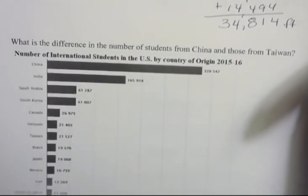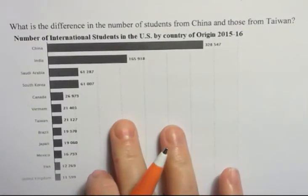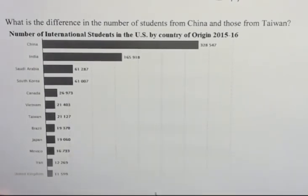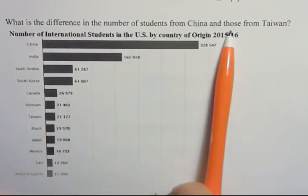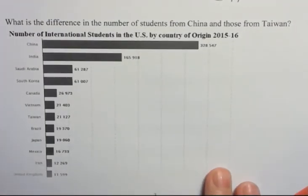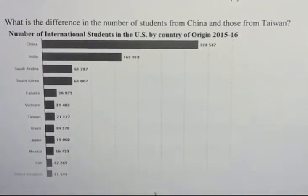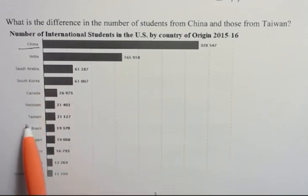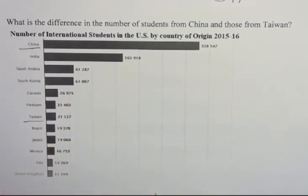And finally, I want to show you another problem that could come from a chart, because sometimes you're not always given numbers directly. In this last problem, it says, what is the difference in the number of students from China and those from Taiwan? And then they give us a graph to show that. These are the number of international students in the U.S. by country of origin for 2015-16. Well, we have China here, and the other one was Taiwan, which is here. So those are the two different rows that we're looking at. And I know this chart is a little bit difficult to read, but this says